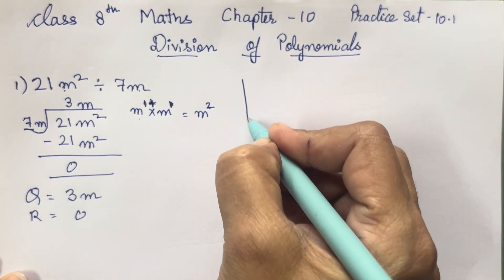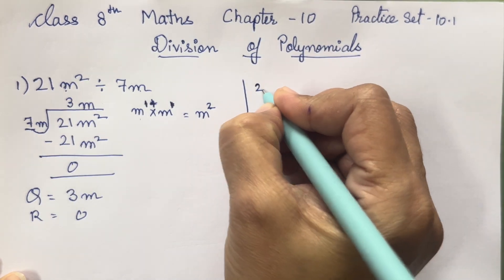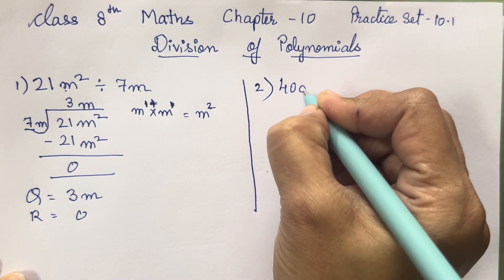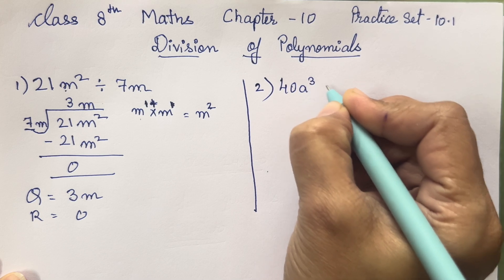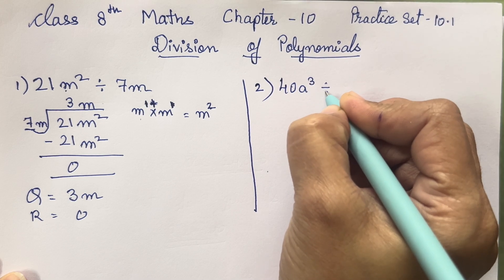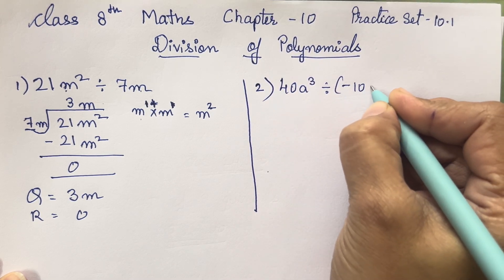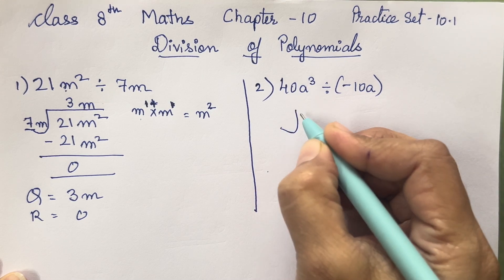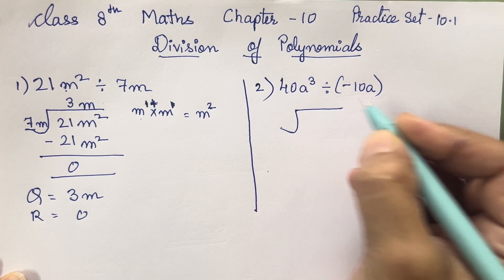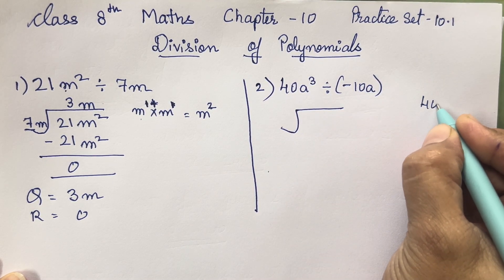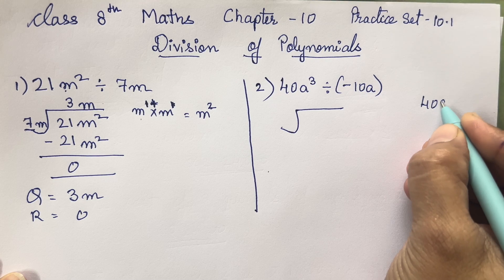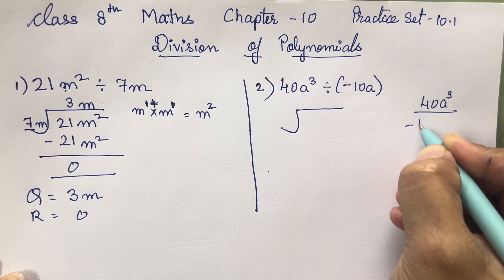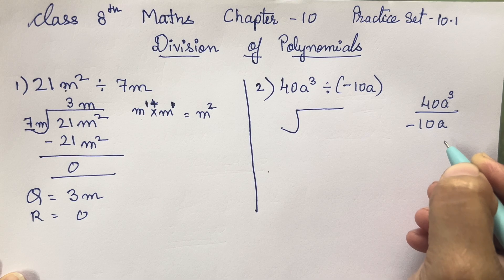Let's start the second sum. Second sum is 40a³ divided by minus 10a. Now again we will arrange this — you can solve it this way also. That is minus 10a.